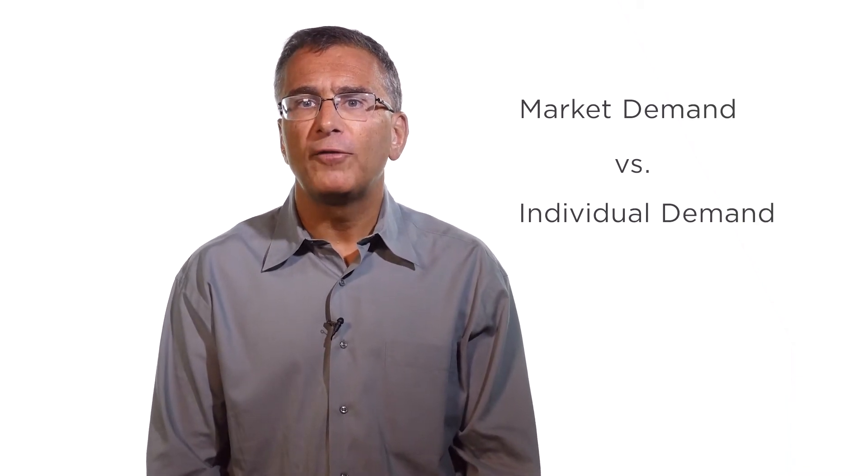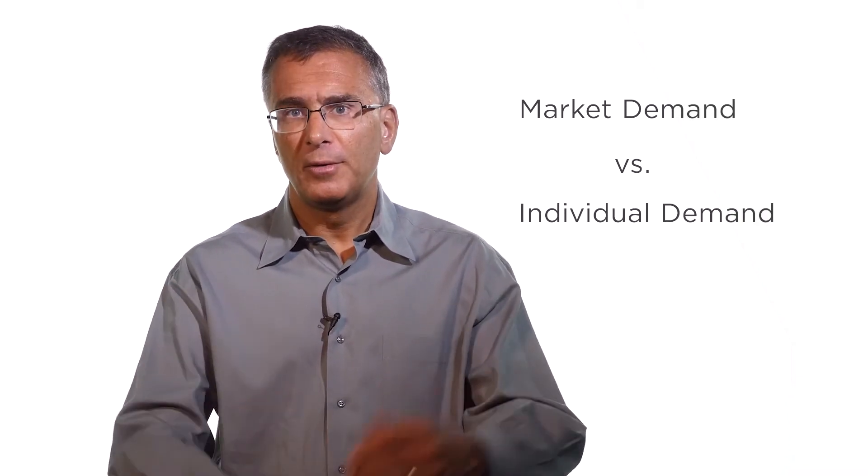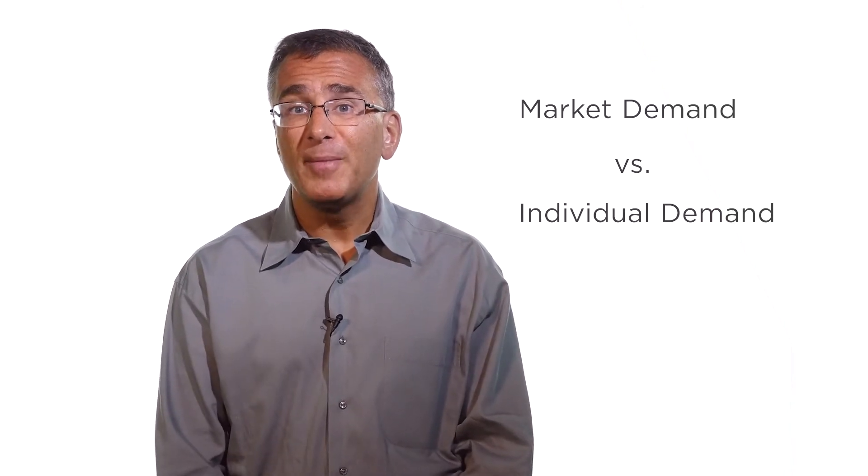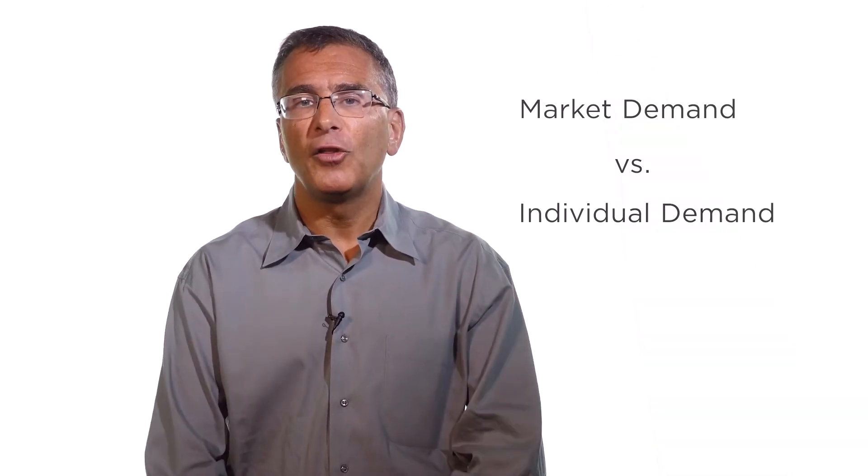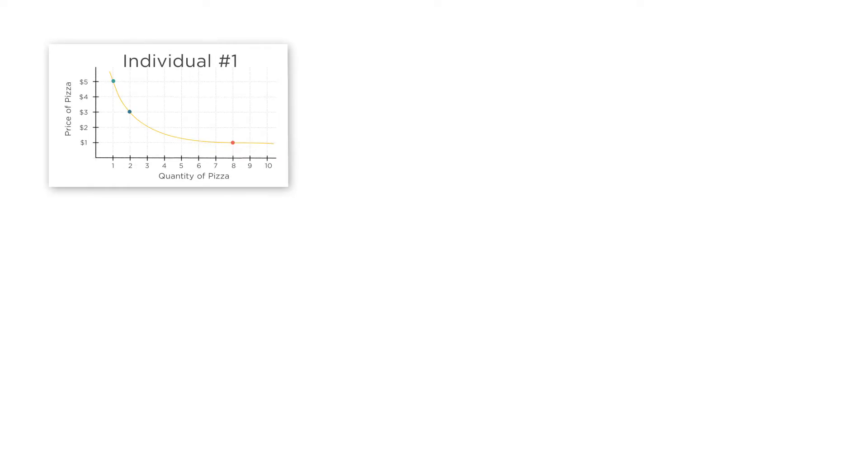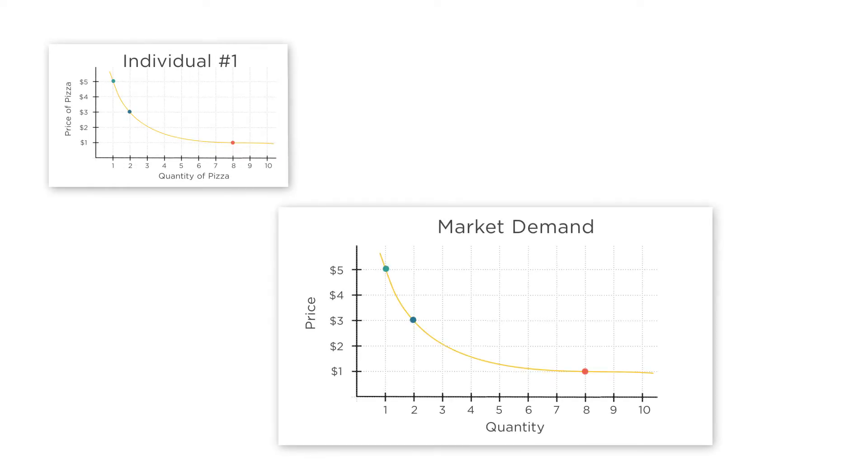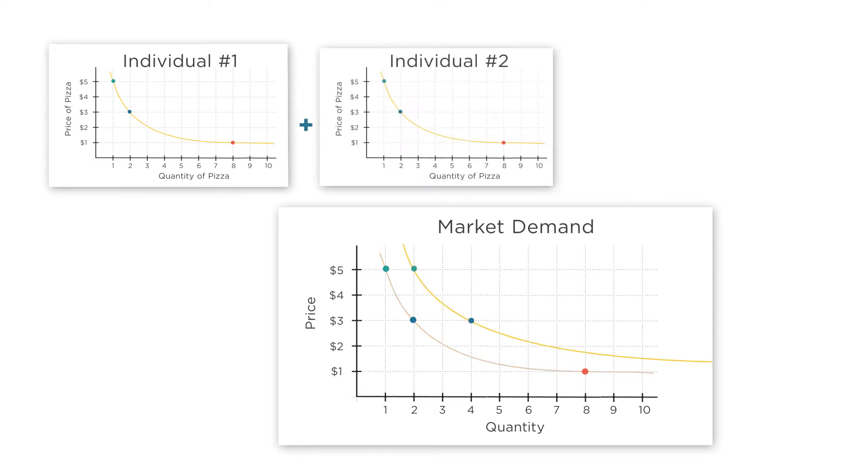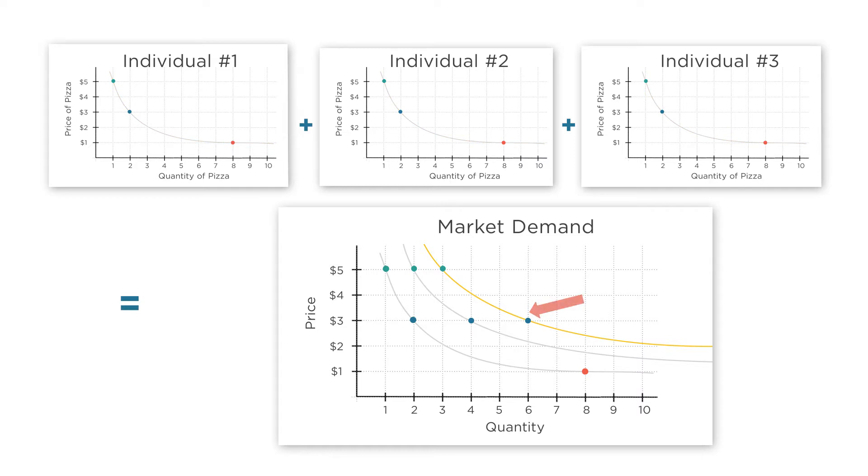The demand curves we've drawn here are for a single individual, namely you. But usually we talk about demand curves for an entire market and all the consumers in it. To go from individual demand curves to the overall market demand curve, we simply sum up the individual demands for each good at each price to give us the total demand of all consumers in the market.